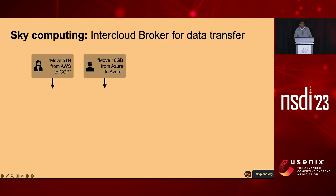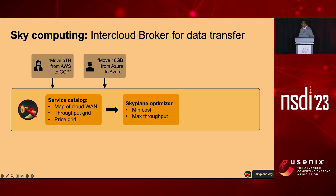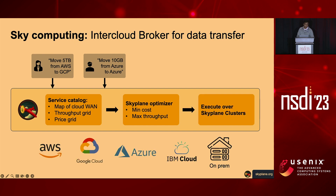In the context of Sky Computing—a paper from Scott Shenker and Ion Stoica at HotOS last year—we consider Skyplane as the inner cloud broker for data transfer. As users operating in multi-cloud environments need to move datasets, they communicate with the Skyplane service and state their intention. Inside the Skyplane service, there's a service catalog with a map of the cloud wide-area network with associated performance and cost data. An optimizer then finds the min-cost and max-throughput transfer plan, which is executed over Skyplane clusters. We have support for AWS, GCP, Azure, IBM Cloud, and on-prem clusters.